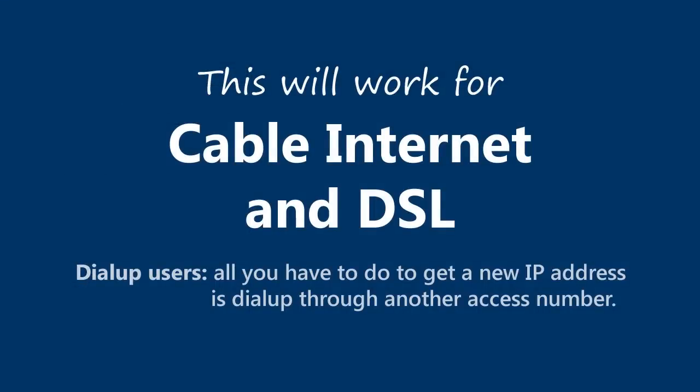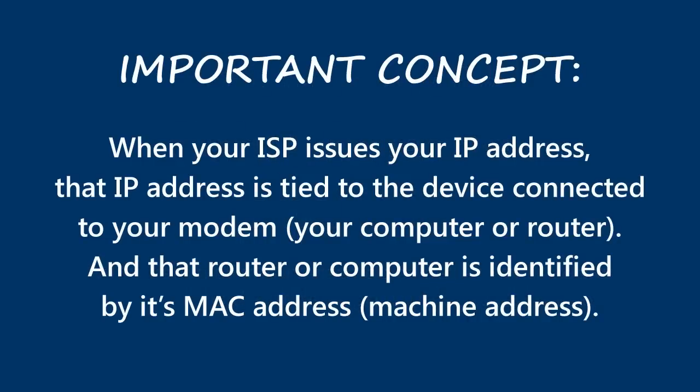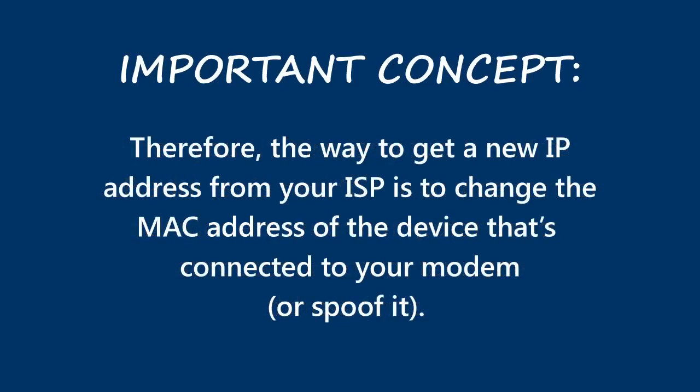My instructions are for both DSL or cable internet connections. If you're on dial-up, all you have to do to get a new IP is dial up through a different access number. But assuming you're on cable or DSL, the main thing to understand is that when your ISP issues your IP address, that IP address is tied to the device connected to your modem, which is probably either your computer or a router.